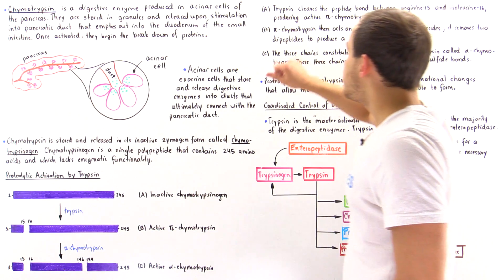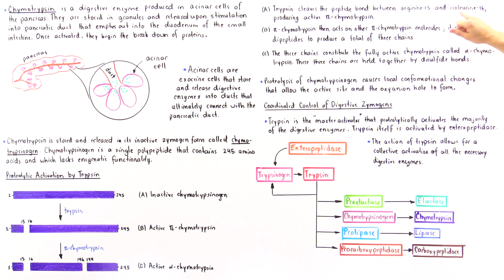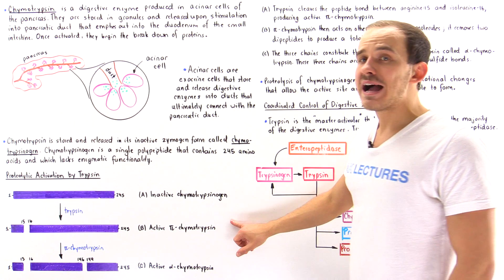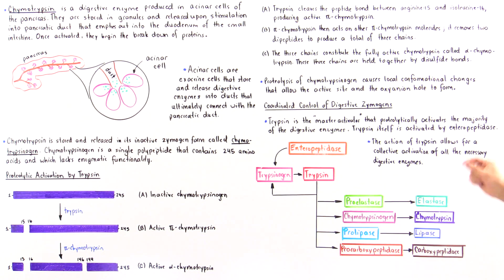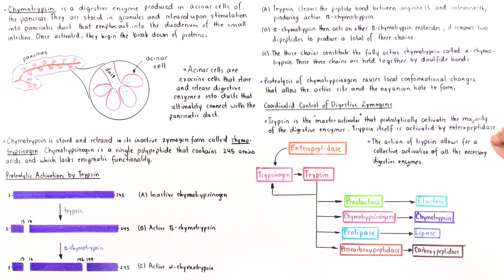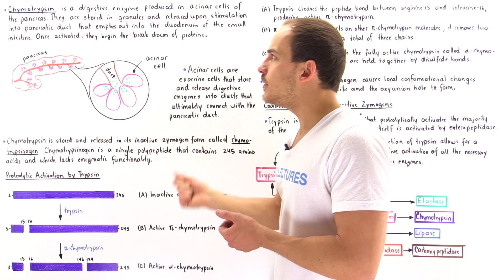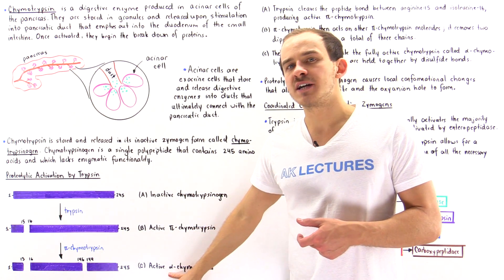To summarize: trypsin cleaves the peptide bond between arginine 15 and isoleucine 16, producing active pi-chymotrypsin. Pi-chymotrypsin then reacts with another pi-chymotrypsin molecule, removing two dipeptides to produce three individual chains. These three chains, held together by disulfide bonds, constitute the fully active enzyme we call alpha-chymotrypsin.